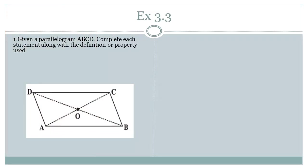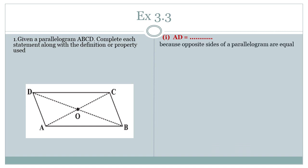Given a parallelogram ABCD, complete each statement along with the definition or property used. First statement: AD equals dash. AD is one side of the parallelogram, and opposite sides of a parallelogram are equal. The opposite of AD is BC, so they will be equal to each other.